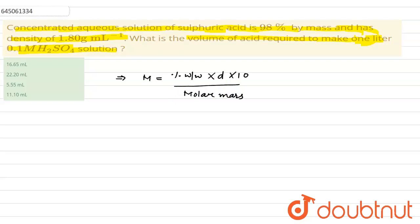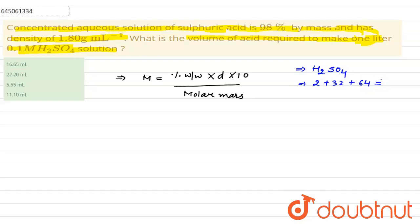The molar mass of H₂SO₄ we know very well: 2 for hydrogen, 32 for sulfur, and 64 for oxygen (4 atoms), giving a total of 98 gram per mole. This is the molar mass. Density and weight by weight percentage are also given.